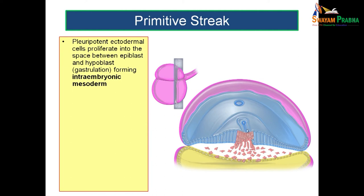The process by which the bilaminar germ disc is converted into trilaminar germ disc is known as gastrulation. Simultaneously, epiblast cells also replace the cells of the hypoblast, which is then renamed definitive endoderm. After the formation of intraembryonic mesoderm and definitive endoderm, the epiblast is renamed as definitive ectoderm.